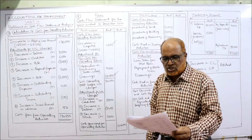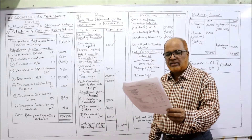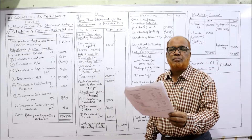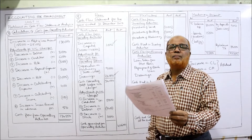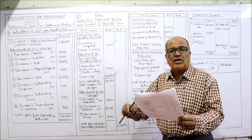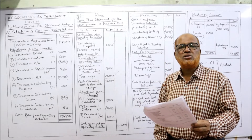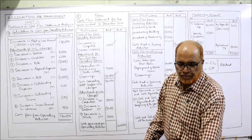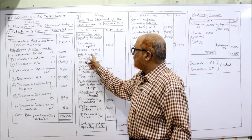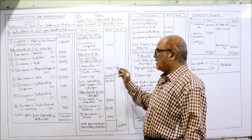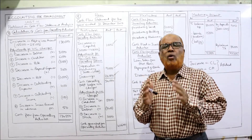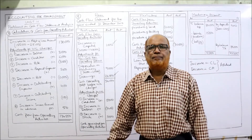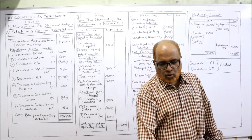Next, provision for depreciation on machinery: 1st January 2017 was 27,000 and 31st December 2017 was 36,000. So depreciation increased — 36,000 minus 27,000 = 9,000 is the depreciation on machinery. This depreciation is a non-cash item, so add depreciation on machinery: 9,000. Now we will open a machinery account because depreciation is given only on machinery — no depreciation on land or building. So we open one machinery account.